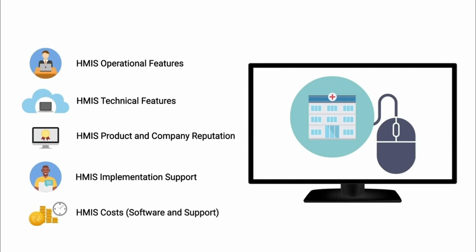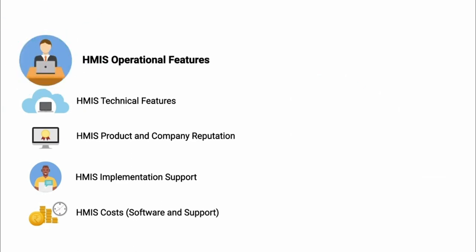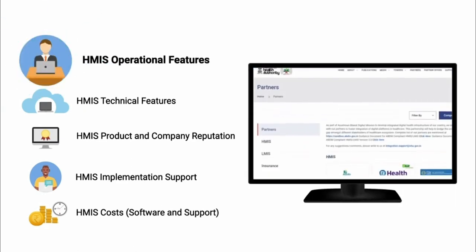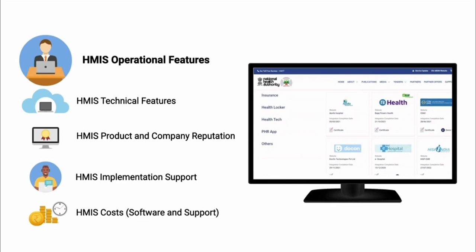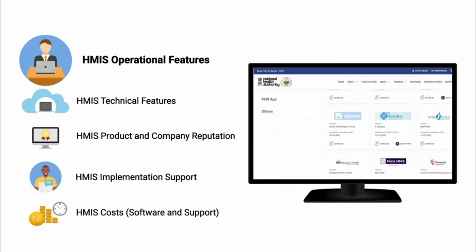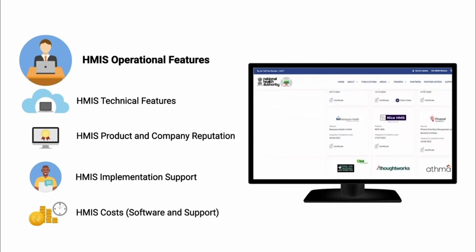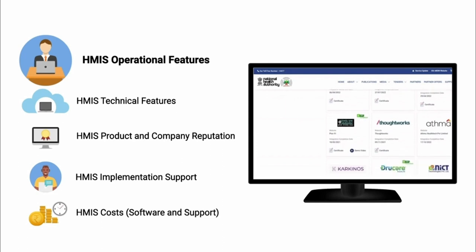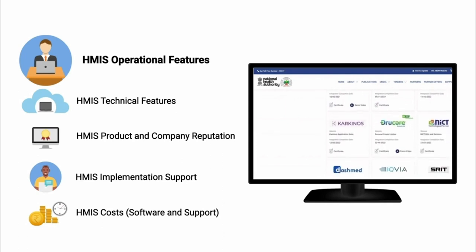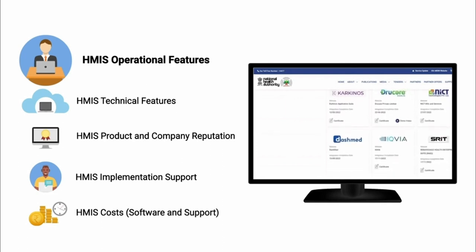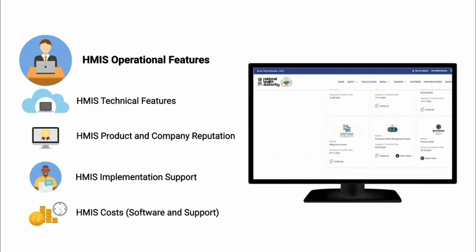To help you select the right HMIS software, here are five important guidelines you may consider. Let's look at each of them in detail. First, ensure that the operational features of the HMIS application meet the clinic and hospital requirements. Visit the ABDM partner website to find a list of the most relevant HMIS features for clinics and hospitals.